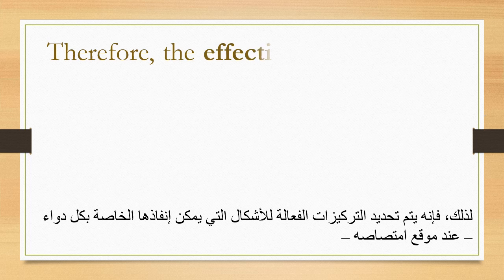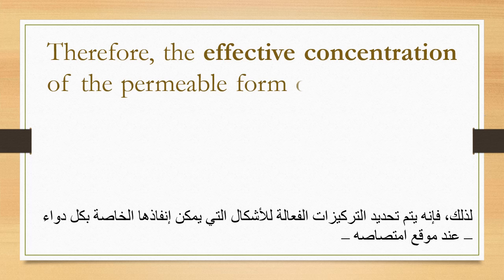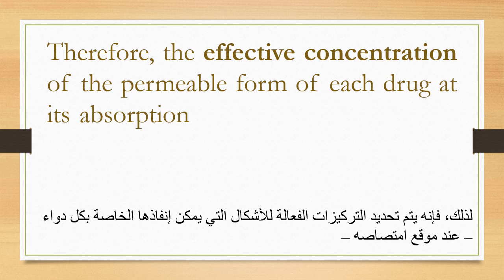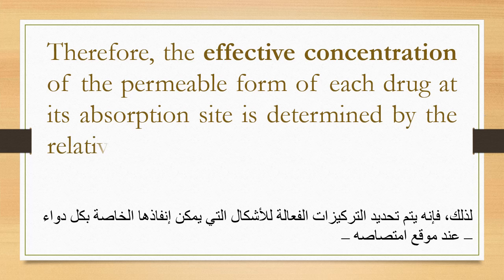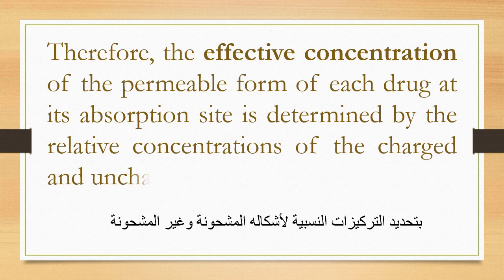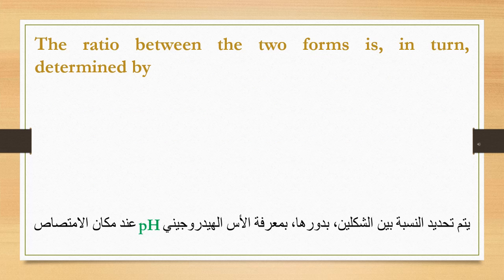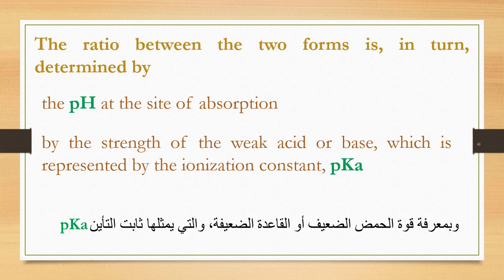Therefore, the effective concentration of the permeable form of each drug at its absorption site is determined by the relative concentrations of the charged and uncharged forms. The ratio between the two forms is in turn determined by the pH at the site of absorption and by the strength of the weak acid or base, which is represented by the ionization constant pKa.